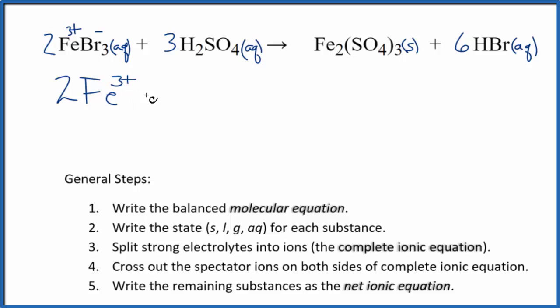2 of those iron 3 ions. I won't write the states now. Let's do that later. We have our 3 bromide ions, but it's 3 times the 2. So we have 6 bromide ions.